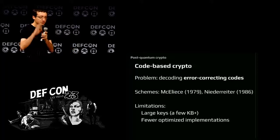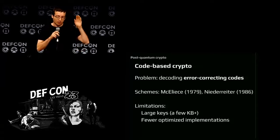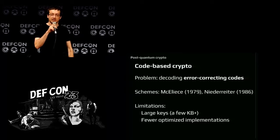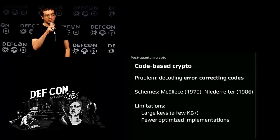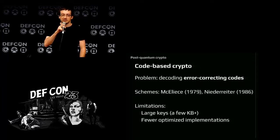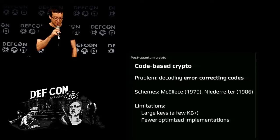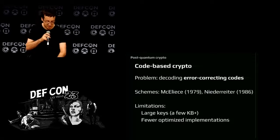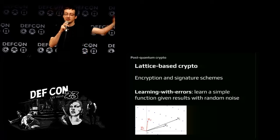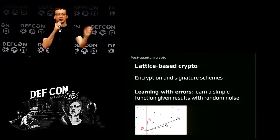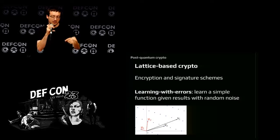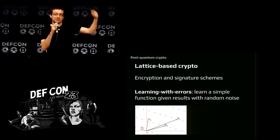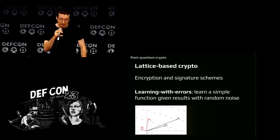There are two types of post-quantum encryption. One is code-based crypto — ideas from the 1970s and 80s. The keys are large, kilobytes in size, but with terabyte hard drives today that may not be a big deal. It's not very fast but not hours-slow — more like milliseconds. The other is lattice-based cryptography, which is very deep mathematically but simple to understand intuitively: you have a function, you know roughly how it looks, and you want to learn it, but an adversary adds noise, making it impossible to deduce the exact function.